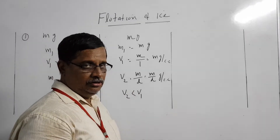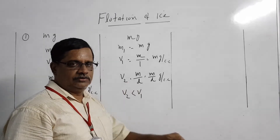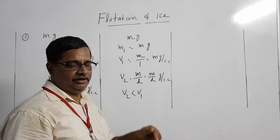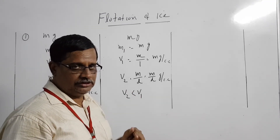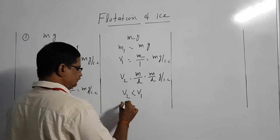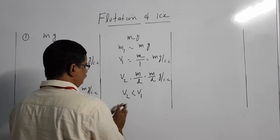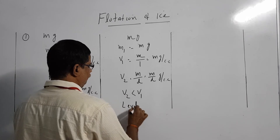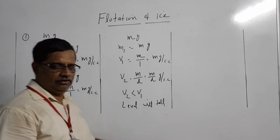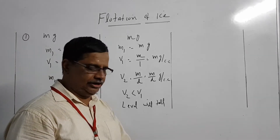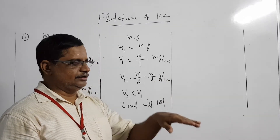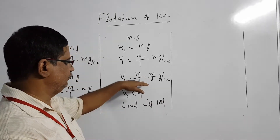This means the volume of water the lead shot displaces after sinking is less than the volume it was displacing while floating. So the level will fall. When a body sinks to the bottom, the volume of water displaced is less than the volume displaced when it was floating, so the level falls.